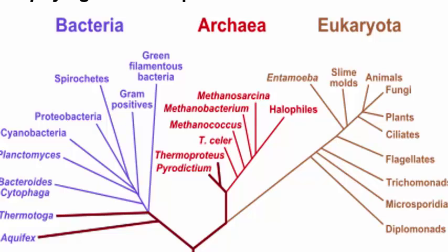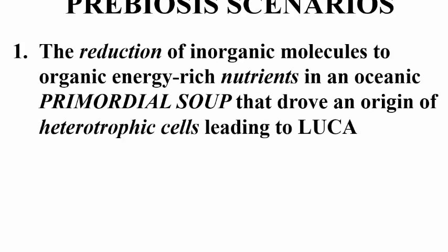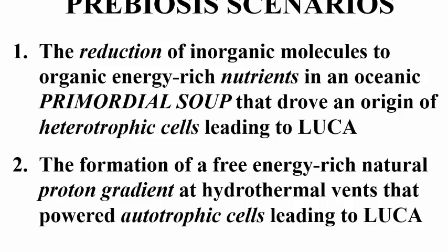If abiogenesis occurred more than once, then maybe the concept of a progenote would be moot, or we would have to think of multiple progenotes. There are two major hypotheses for which chemicals were already present on Earth when the planet formed about 4.8 billion years ago. One hypothesis assumes a reducing atmosphere on the prebiotic Earth that led to an origin of heterotrophs and heterotrophic metabolisms first. The other hypothesis begins with a non-reducing Earth atmosphere and suggests that autotrophs came first, with autotrophic metabolism first powered by a natural proton gradient.